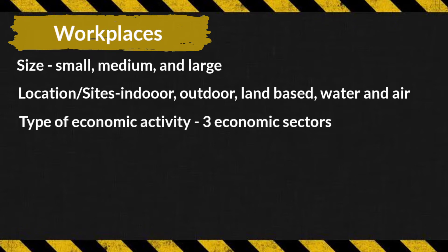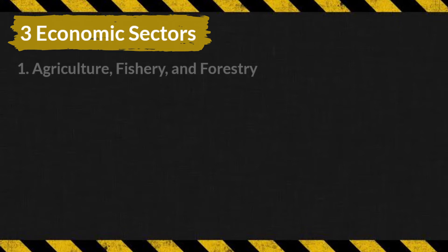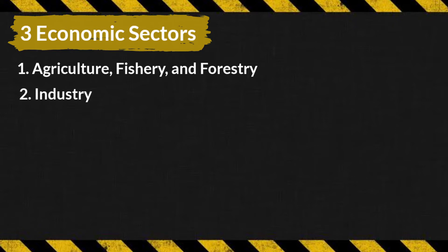The last classification is type of economic activity, which covers three economic sectors. The first sector is agriculture, fishery, and forestry. The second sector is industry, which includes mining, manufacturing, electricity, gas, water, and construction. The third sector is services, which includes wholesale and retail trade, hotels and restaurants, transportation, financial, real estate, public administration, education, health and social work, and other community services.